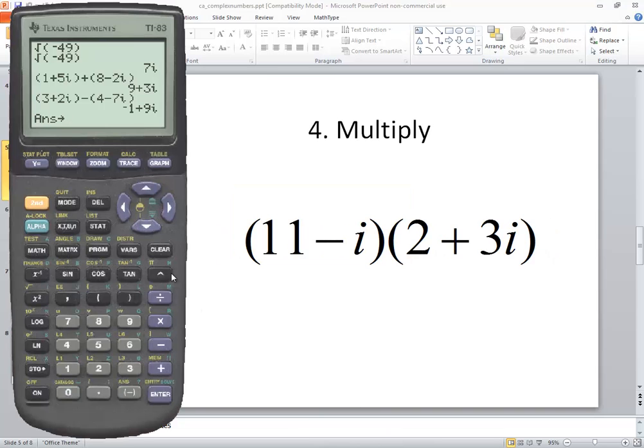For multiplication, again, we're going to type in as we see it. So I got beginning parentheses, eleven minus, second decimal for the i, closing parentheses, beginning parentheses, two plus three, then second decimal for the i, closing parentheses, enter. And our answer is twenty-five plus thirty-one i.